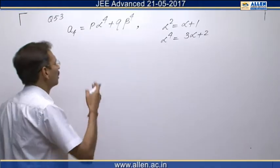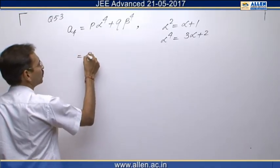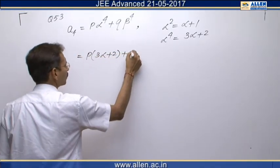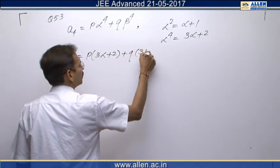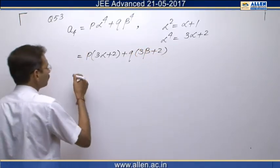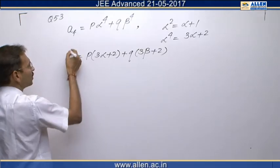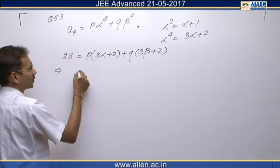Similarly for beta, we will replace it here. This is P times 3 alpha plus 2 plus Q times 3 beta plus 2. Now we know that A4 is given as 28. So we will solve this equation.